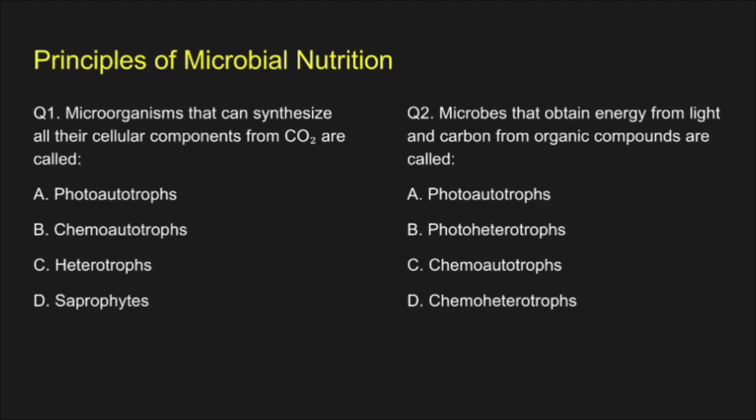Now the next topic is principles of microbial nutrition. The first question: Microorganisms that can synthesize all their cellular components from carbon dioxide are called — A. Photoautotrophs, B. Chemoautotrophs, C. Heterotrophs, D. Saprophytes. The correct answer is Photoautotrophs.